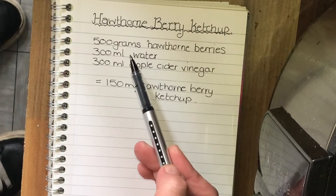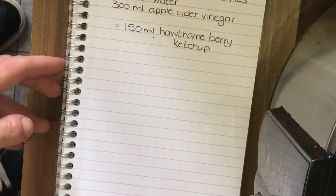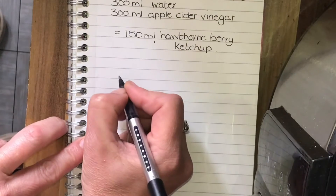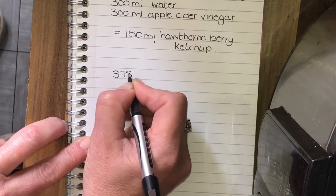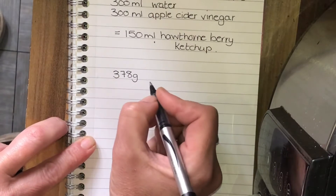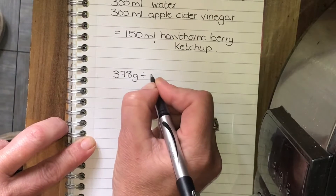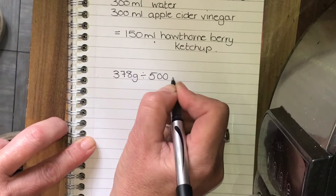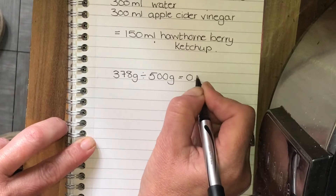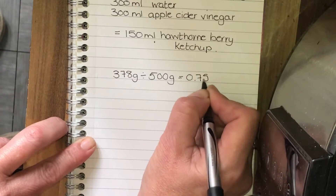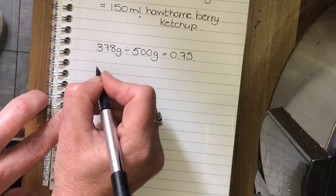When I'm just using the hawthorn berries, as they don't contain much juice, I normally use 500 grams of hawthorn to make 150 ml, with 300 ml of water and 300 ml of apple cider vinegar. But because those tomatoes are way juicier than the hawthorn, I'm using less quantity of plant matter this time — I've got 378 grams of hawthorn and tomatoes, which works out at 75.6% of the 500 grams.